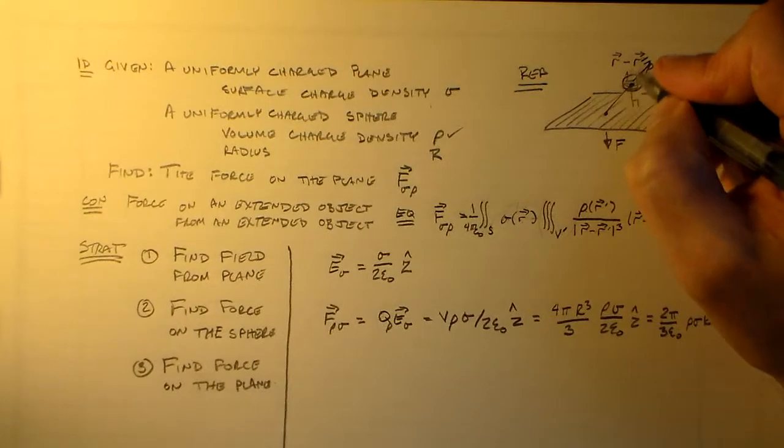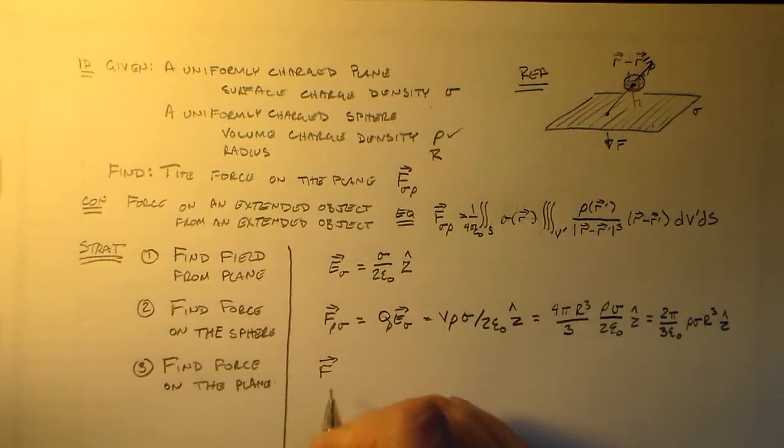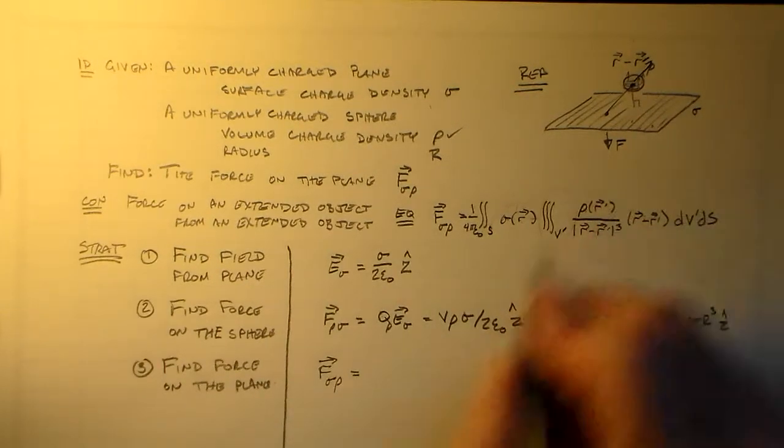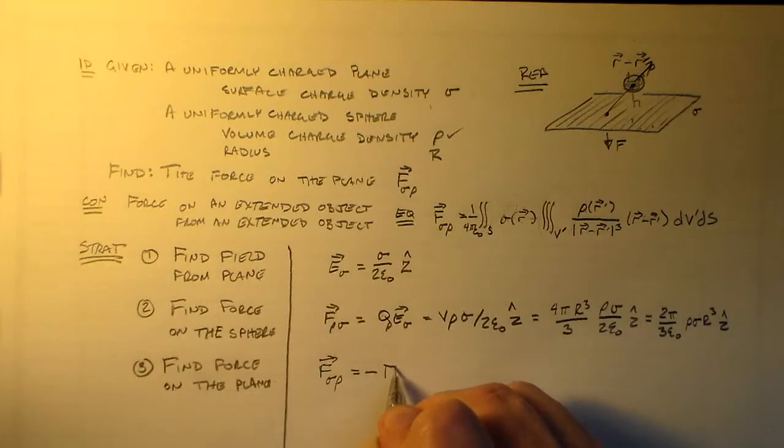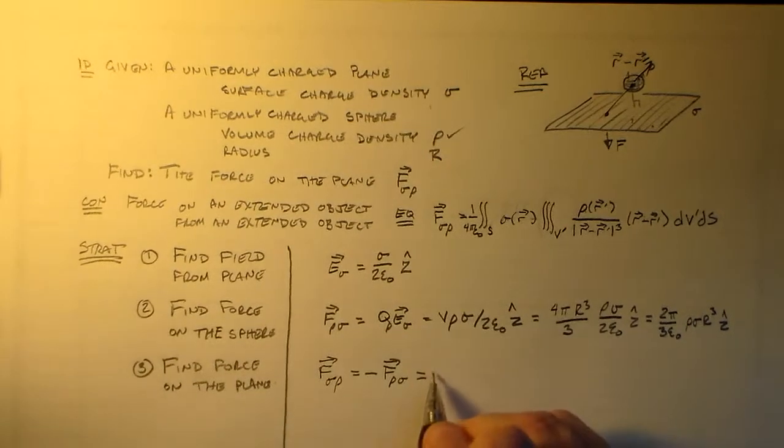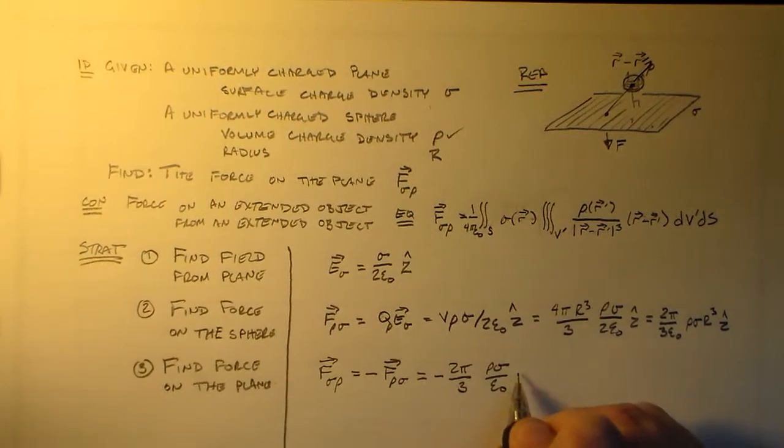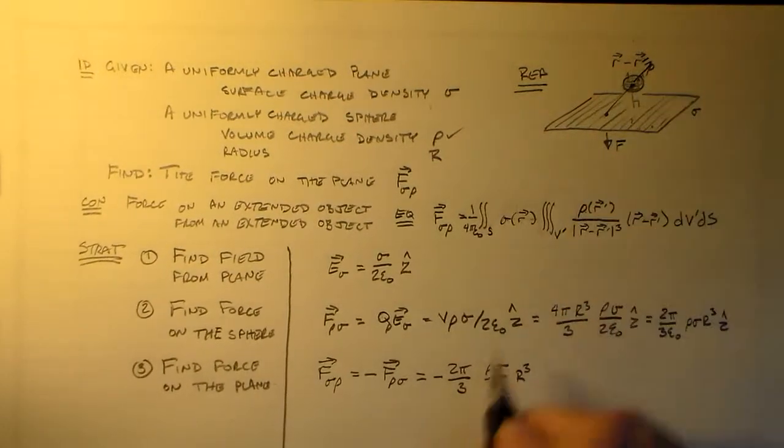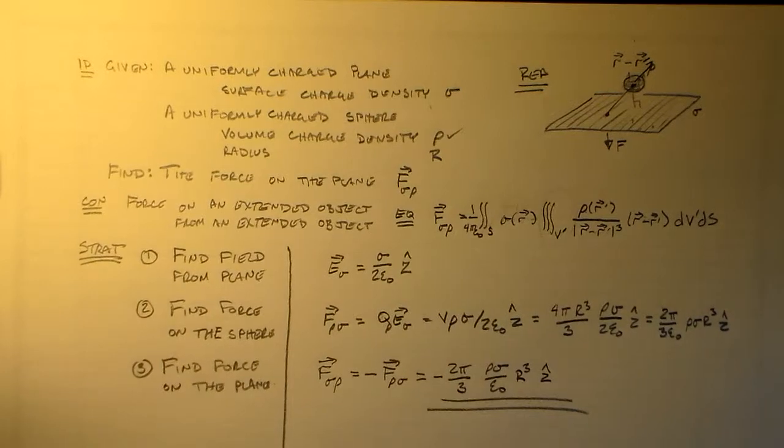So, this guy is getting pushed away from this guy. He's getting pushed up. That means that this other guy is getting pushed down. So, Newton's third law says that the force on this thing from that thing is equal to the minus the force on this thing from that thing. So, we have minus f rho sigma. So, we just have minus 2 pi over 3 rho sigma epsilon naught. I think that looks a little nicer. Times r cubed. R cubed's just part of the volume of this thing. The other parts are over here. And a little bit hidden. Z-hat. And there we have it. That's it. That's the force on this plane.